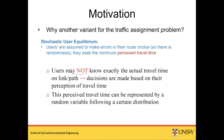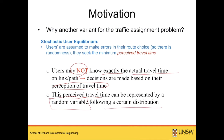Users may not know exactly the actual travel time on any link or path, so decisions are made based on their perception of the travel time. This perceived travel time can be represented by a random variable following a specific distribution, and that's how we introduce stochasticity or randomness to the UE problem.